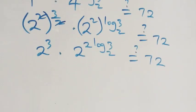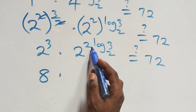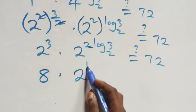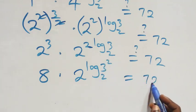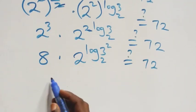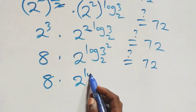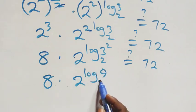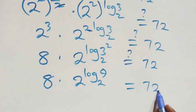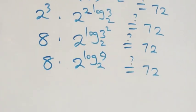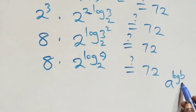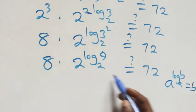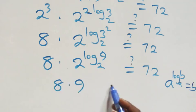Two raised to power three multiplied by itself three times gives eight. We can reverse the power and log, and we have two raised to power log three squared to base two — which is the same as nine. This follows from the log rule: a raised to power log base a of b equals b. So we have eight times nine equals seventy-two.